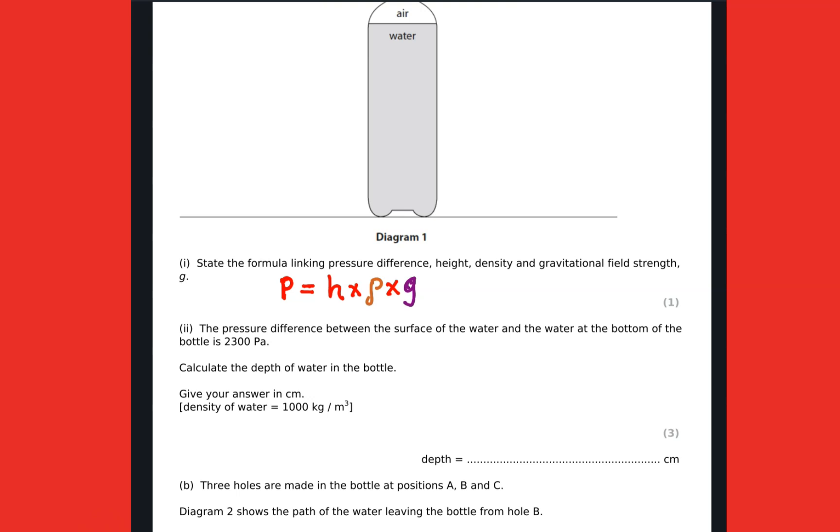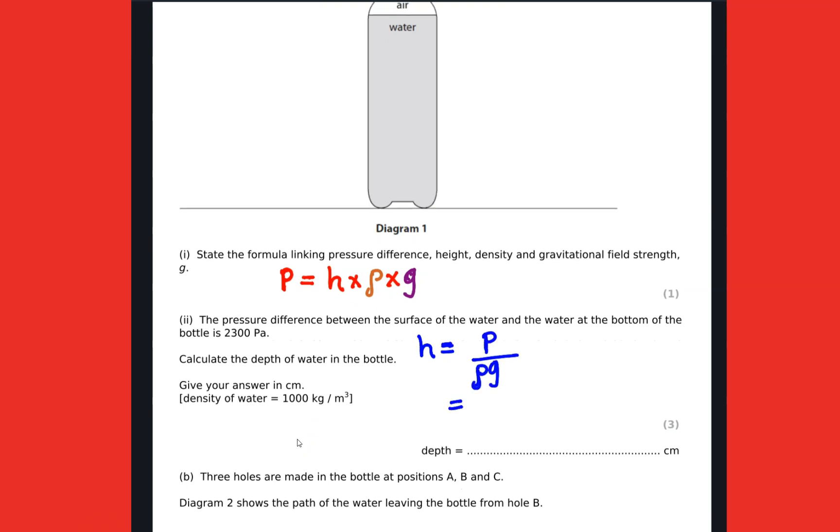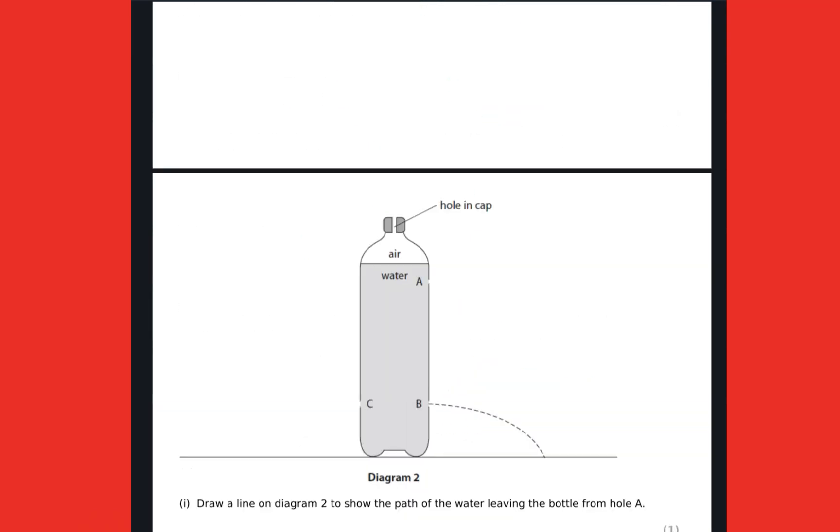The pressure difference between the surface of the water and the water at the bottom of the bottle is 2300 pascals. Calculate the depth of the water in the bottle. Then we're going to substitute and apply the formula. Making h the subject of the formula and substituting our values, density is 1000, g is 10, then this becomes 0.23 meters times 100 in order to get our answer in centimeters as 23 centimeters.